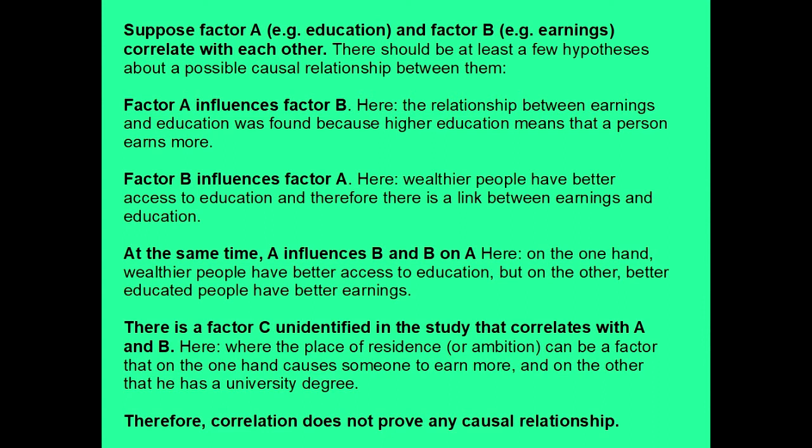Now, there is also a possibility that there is a factor C, unidentified in the study, that correlates with both A and B. Here, the place of residence or ambition can be a factor that, on one hand, causes someone to earn more, and on the other hand, that he has a university degree.